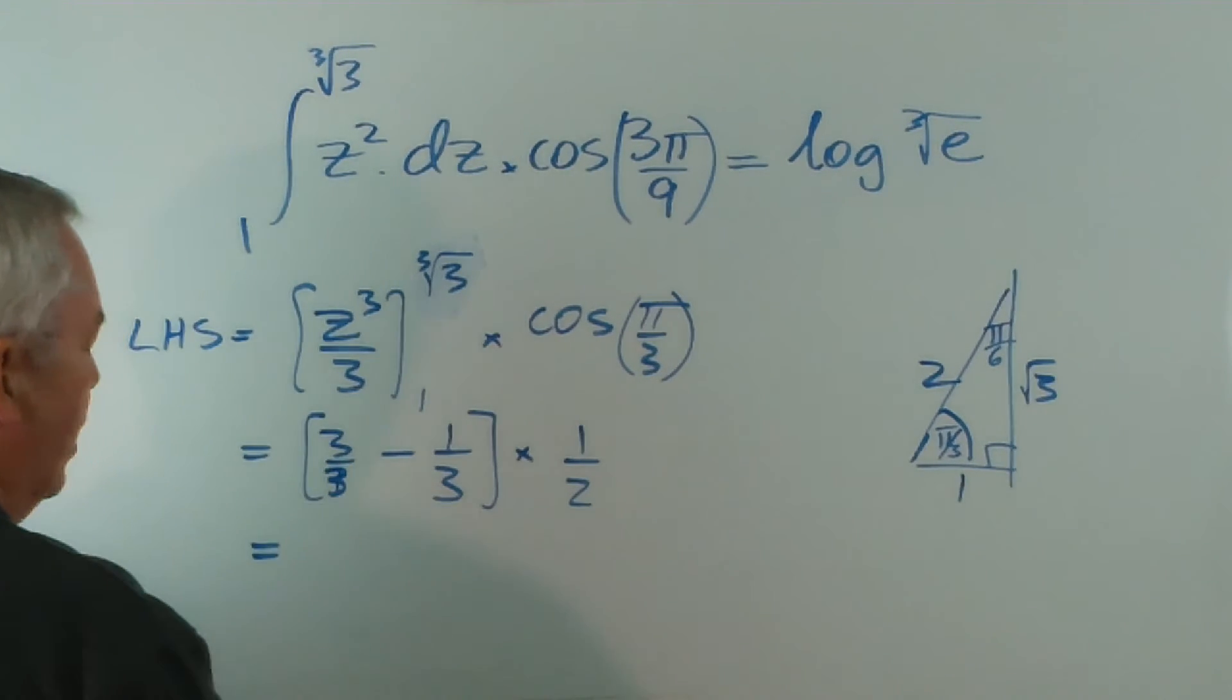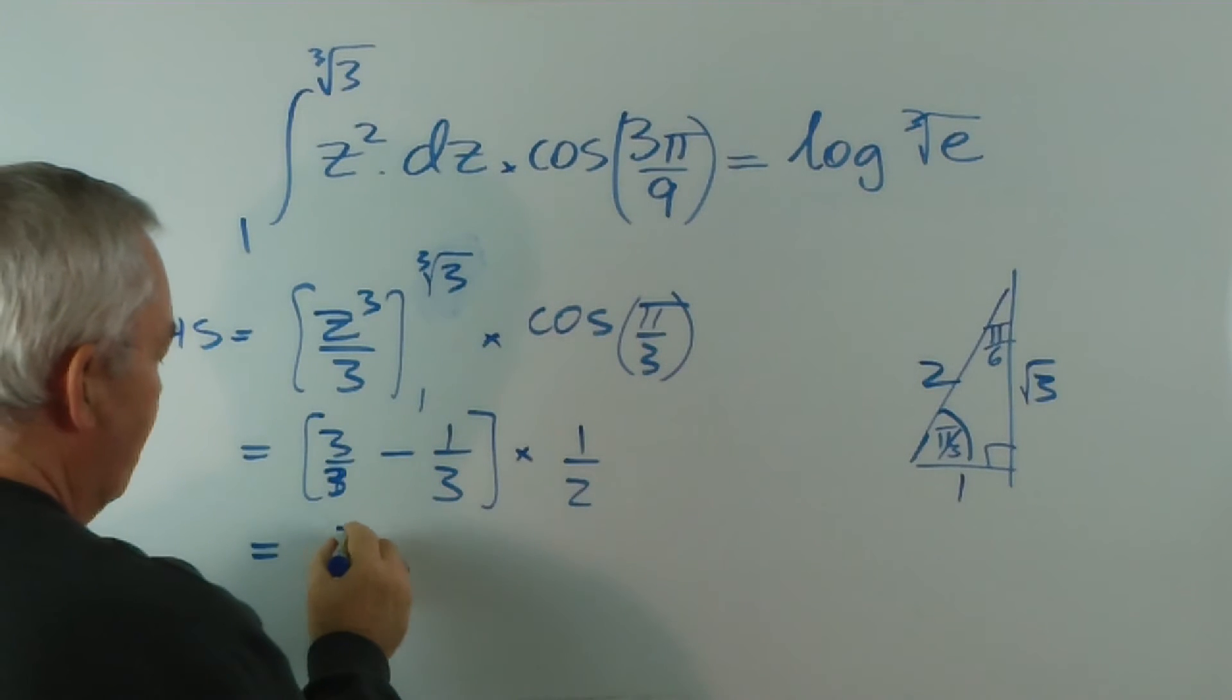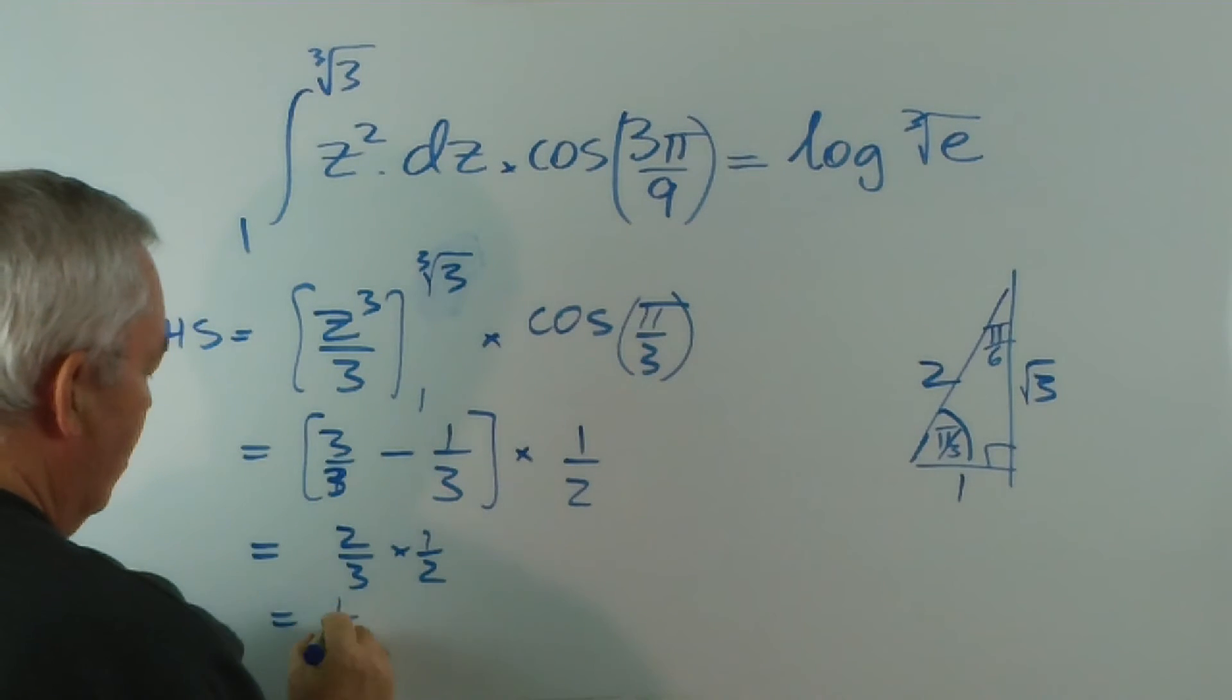Sorry... just correcting myself there... and 3 thirds minus 1 third is 2 thirds... multiplied by 1 half... is 1 third.